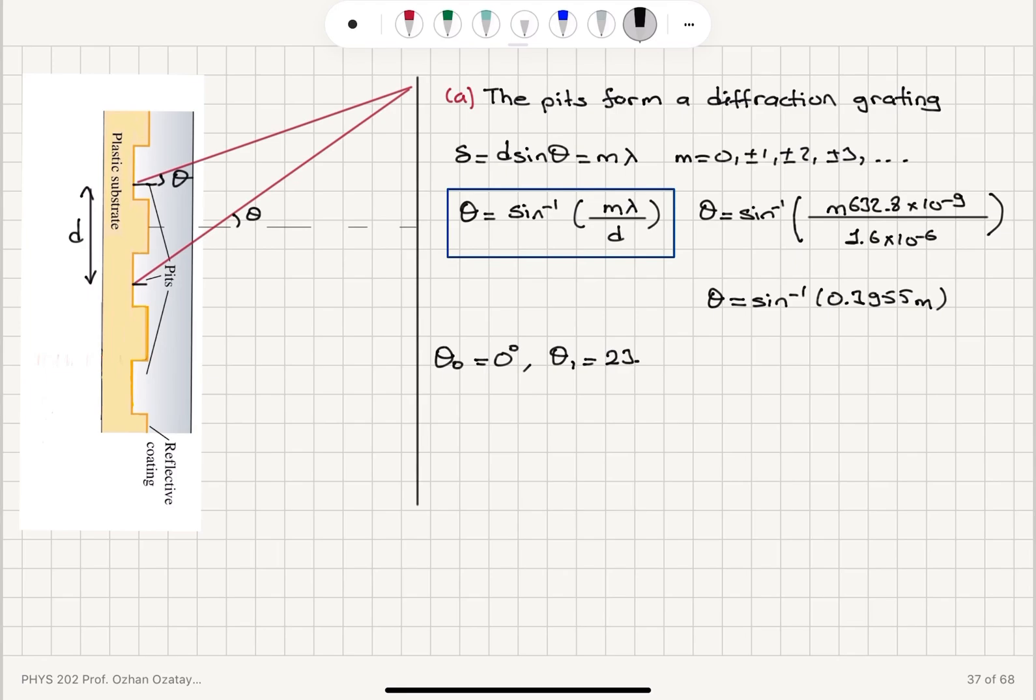Sin inverse of 0.3955 M gives us 23.3 degrees. And for M equals 2, theta 2, we have 52.3 degrees. If you try M equals 3, it's going to be greater than 1 here.